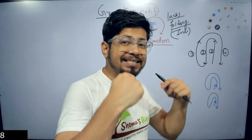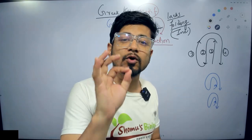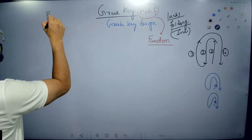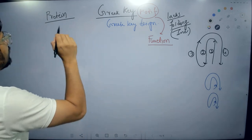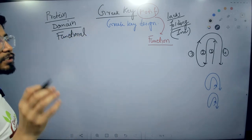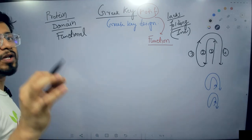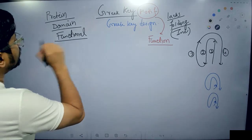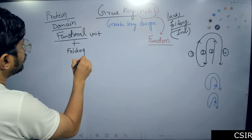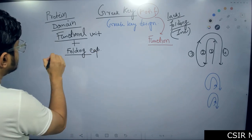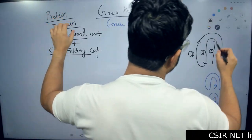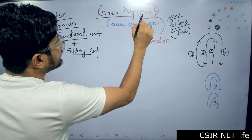Any region of the protein that is functional and can fold itself — having independent folding capability — is known as a domain. That is the key difference between protein motifs and protein domains. A domain is also a functional unit, but it is specifically known as the smallest independently foldable functional unit of a protein. The Greek Key is not a domain because it lacks self-folding capability — it is just a motif.